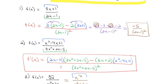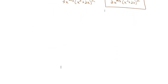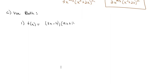And that is our quotient rule: the derivative of the top times the bottom, minus the derivative of the bottom times the top, all over the bottom squared. We can actually combine the product rule and quotient rule together into one problem.